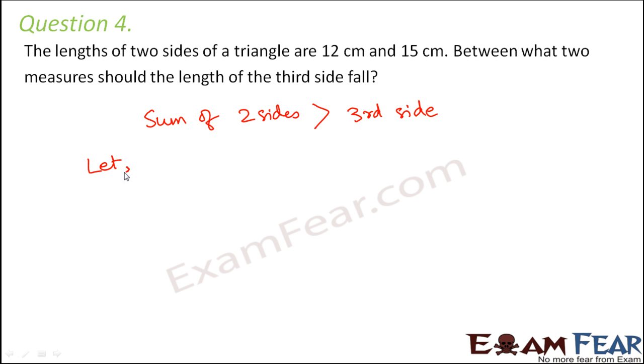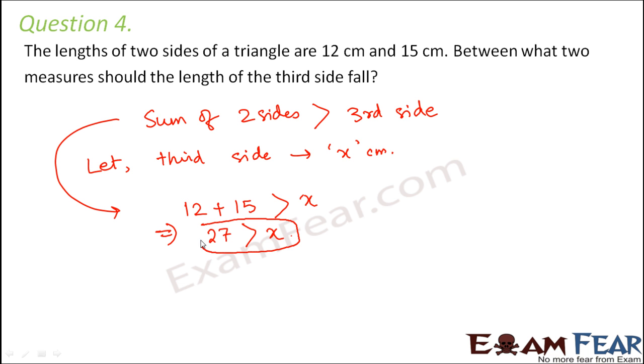Let's say that the length of the third side is x cm. As per this property, the sum of these two sides, 12 plus 15, should be greater than x. So 12 plus 15 is 27, which means 27 should be greater than x. That means the value of the third side should be less than 27 centimeters. So that is one relation that we have developed.